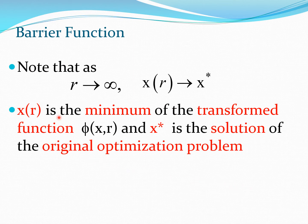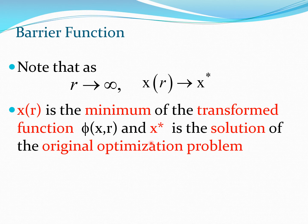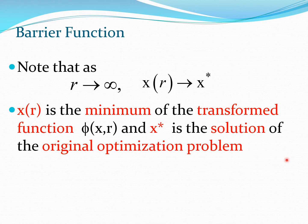Let us look at how the barrier function behaves with respect to the parameter r. We start with a small value of r and progressively increase it. As r increases, the solution x(r) — which minimizes the composite transformation function φ(x, r) — becomes closer to x*, the true solution of the optimization problem. So as r becomes larger and larger, the optimal solution obtained by minimizing the transformation function converges to the actual desired minimum x*.